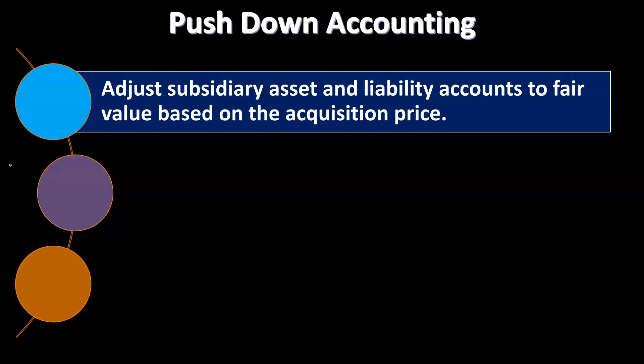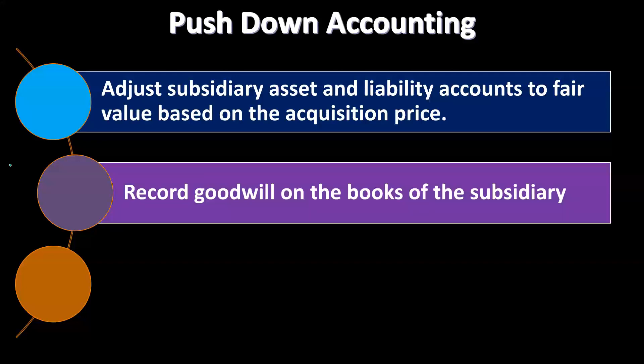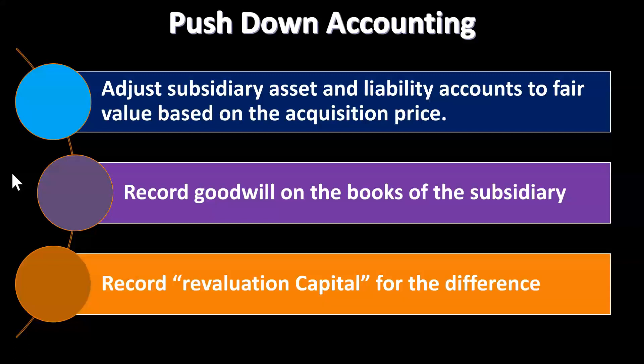Because consolidation adjustments are not recorded on the books, we have to repeat them every time we do the consolidation process. That can be tedious, and push down accounting has the potential to make it easier. To record goodwill on the books of the subsidiary, we perform the same calculation: the price P paid for the stocks of S, applied out to the book value and adjusted to the fair value of assets and liabilities, with the difference going to goodwill.